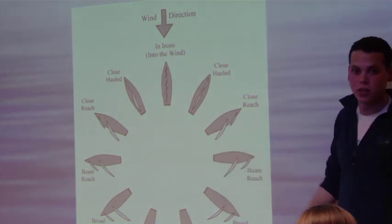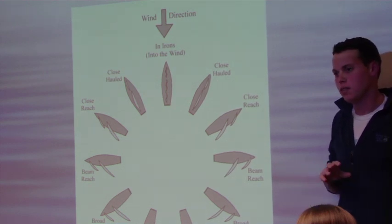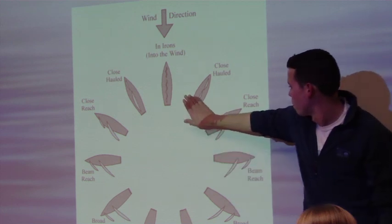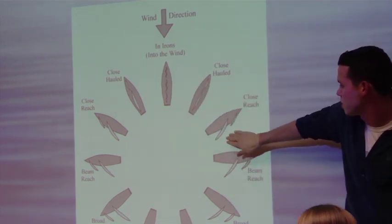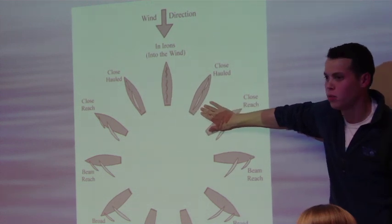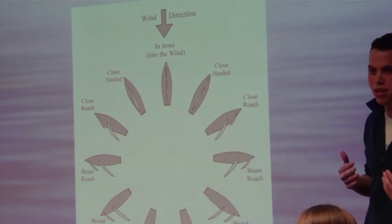Next, we have close reach. And close reach is roughly 65 degrees off the wind. So we're going to fall off. So notice that our sails are a little further out than being close hauled. When we're close hauled, we want our sails all the way in.